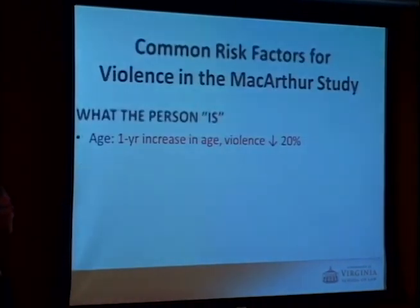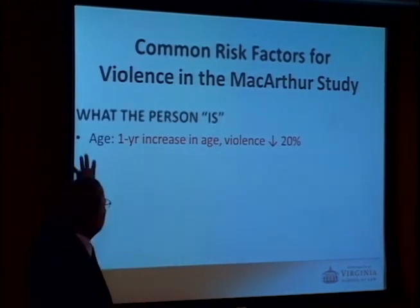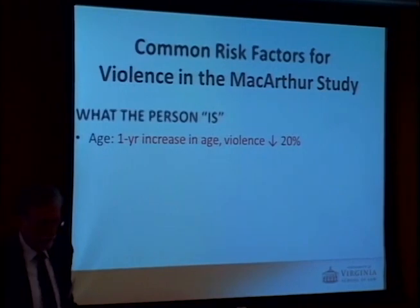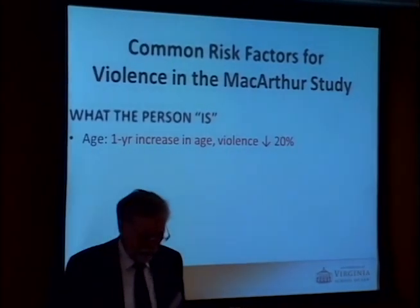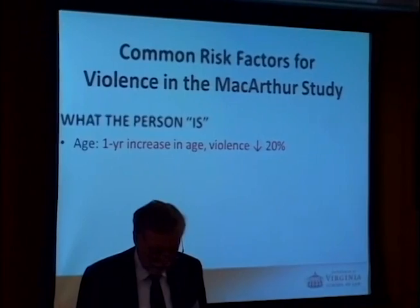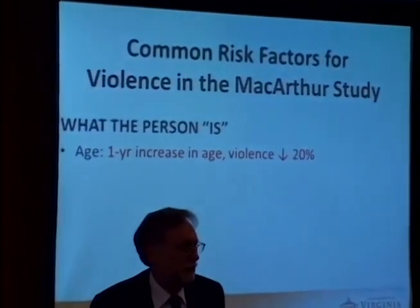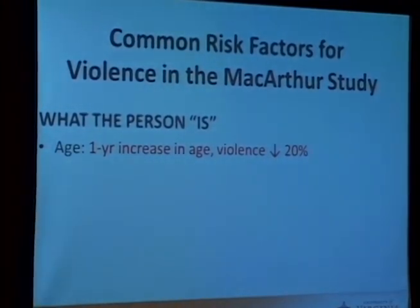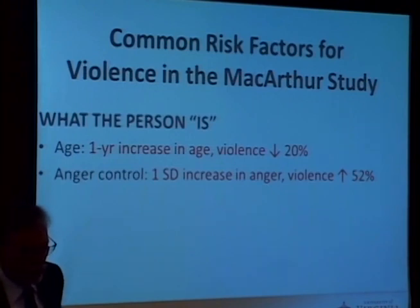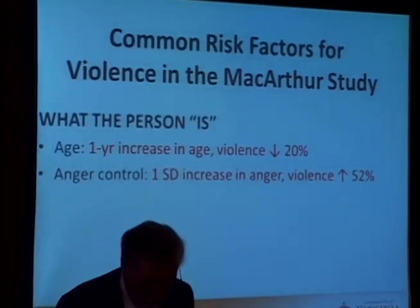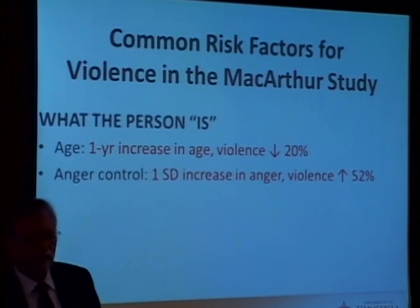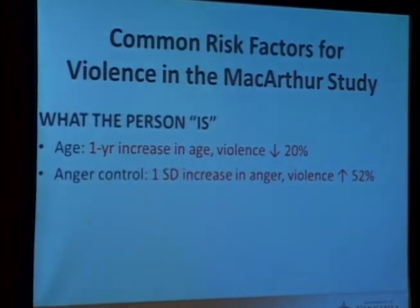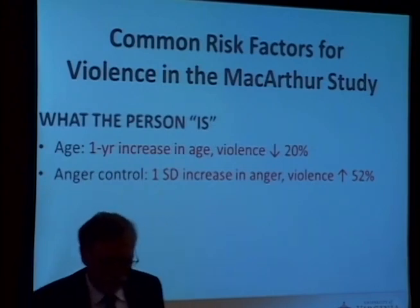We divided risk factors into four categories. The first is what the person is. Age: for each one-year increase in age, the probability of violence decreased by 20% — the first thing I've encountered that's good about getting older. Anger control: a one-standard-deviation increase on the Novaco anger control instrument increased violence by 52% — the most specific item being 'when I get mad, I throw things,' which is quite predictive of later violence. And gender: men were 51% more likely to be violent than women.